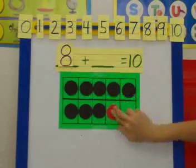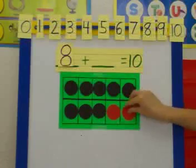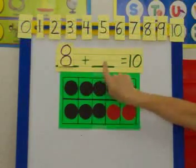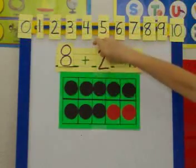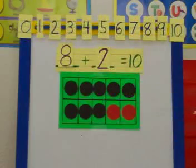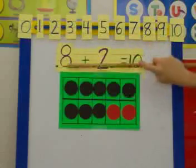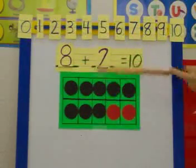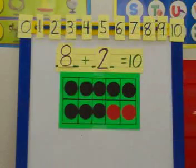So I'm going to use a different color dot to show 1, 2 empty spaces. But I'm not done yet because I need to put my 2 right in my open space. So I've just created an addition sentence that shows 8, those are those 8 black dots, plus these 2 red dots equals 10.